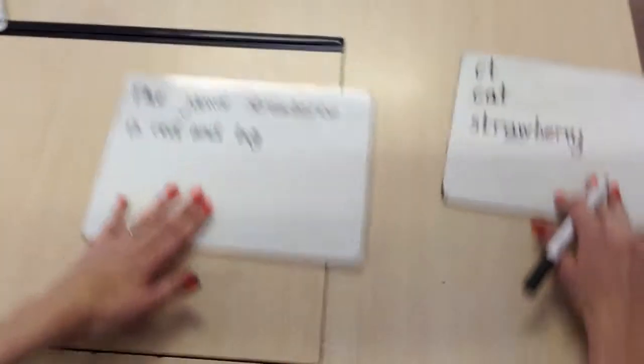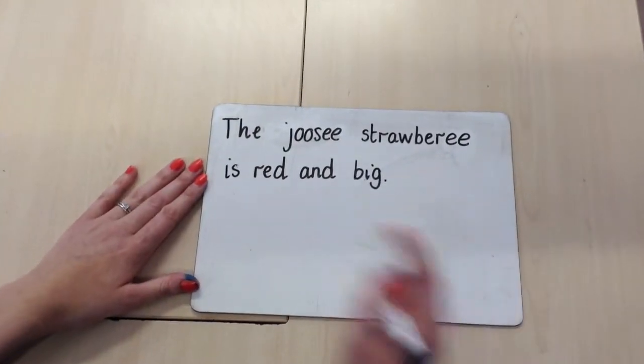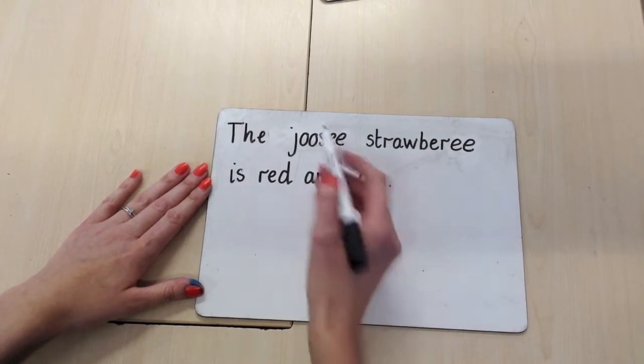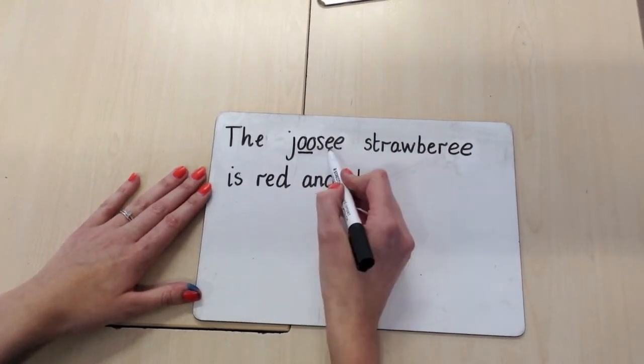Here's an example of a sentence that's written using phonics. So the juicy strawberry is red and big. You can see we've got the OO-digraph, the E-digraph, the OO-digraph.